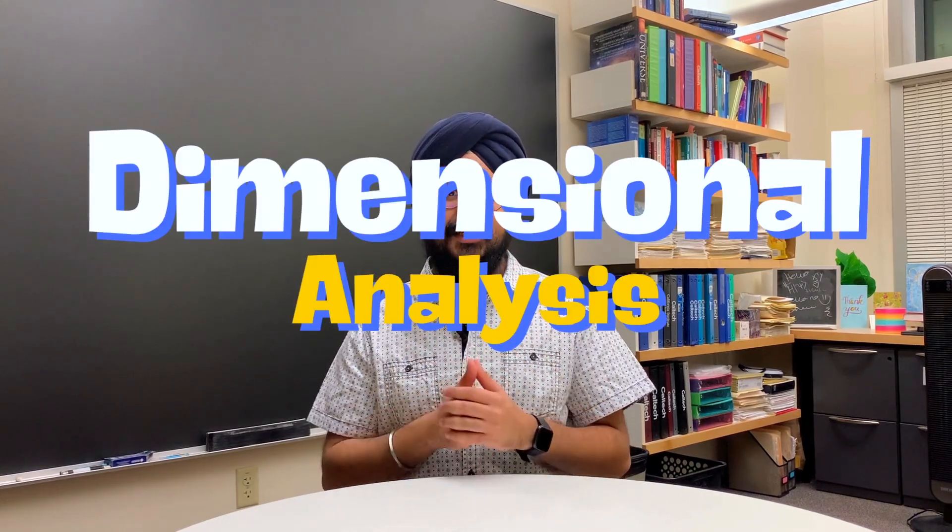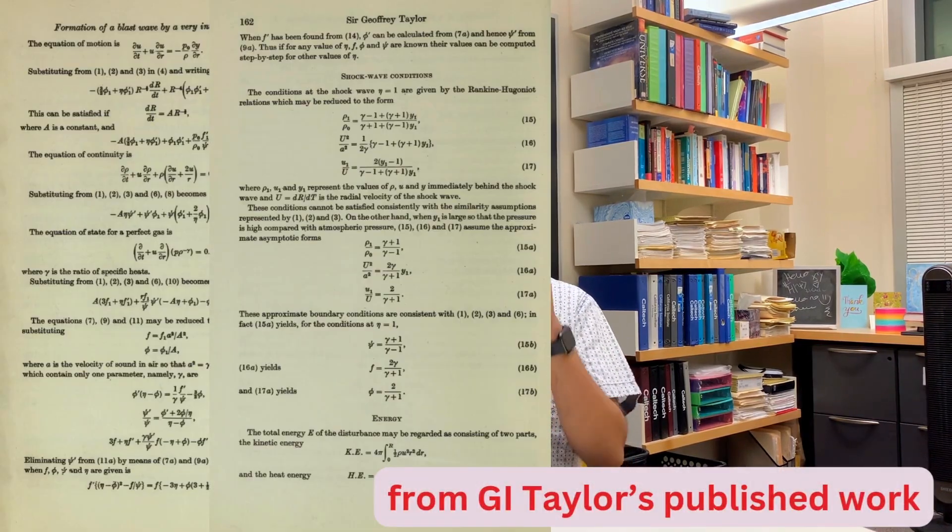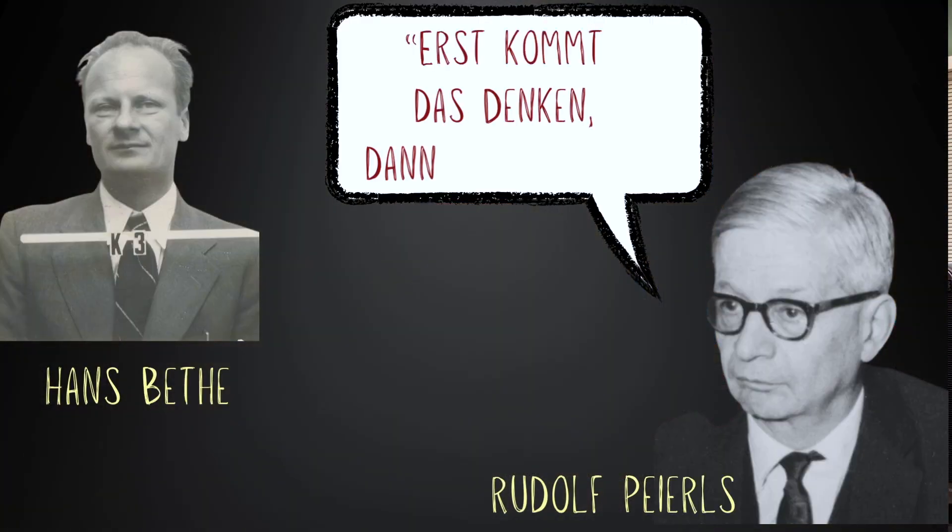While Taylor's work was indeed a hydrodynamical masterpiece, can we, you and I, perform a similar calculation that captures the essence of estimating the yield using blast pictures? This is where dimensional analysis is going to become invaluable. While the full detailed solution to the differential equations provides the most authoritative answer to the problem, a quick back-of-the-envelope estimate reveals a lot about what's going on. As the famous physicist Rudolf Peierls once told young Hans Bethe, 'First comes das denken, dann das integral,' which roughly translates to 'first think, then do the integral.'